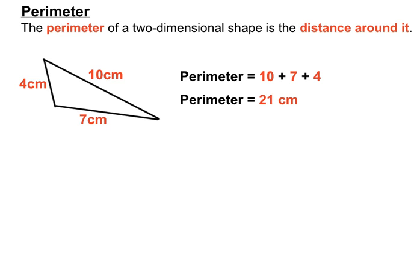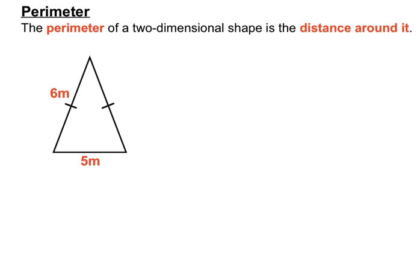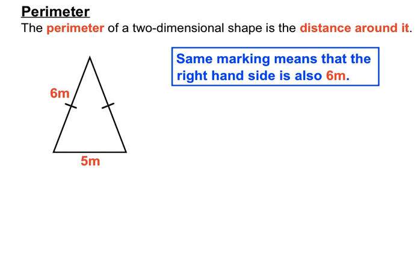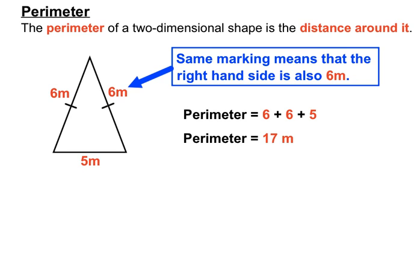This one seems to have a missing side, but the single marking on the left-hand side and on the right-hand side tells us they are equal. So the right-hand side is also 6 meters long. Once we've filled that in, 6 plus 6 plus 5 gives us a perimeter of 17 meters.